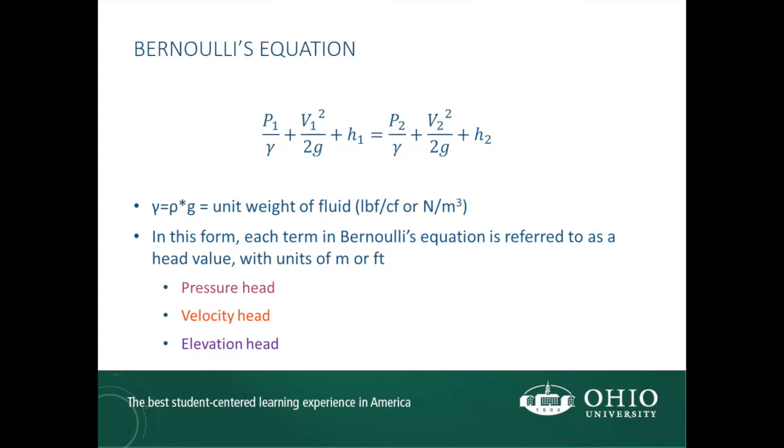Bernoulli's equation can also be written in another form, by dividing through both sides by g. This form gives us p1 over gamma plus v1 squared over 2g plus h1 equals p2 over gamma plus v2 squared over 2g plus h2, where gamma, the unit weight, is used to replace the term rho times g.